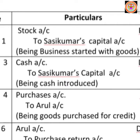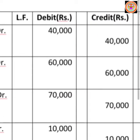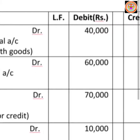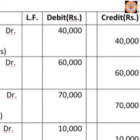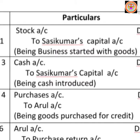Start with the word 'To' — 'To Sassi Kumar Capital Account.' Amount is Rs.40,000. The debit amount should be written on the debited account line, and the credited account amount should be written on the Sassi Kumar Capital Account line. Both debit and credit amounts must be equal — like a weighing plate, both plates are to be equalized. All debit accounts must equal all credit accounts. Then write the narration: 'Being business started with goods.'